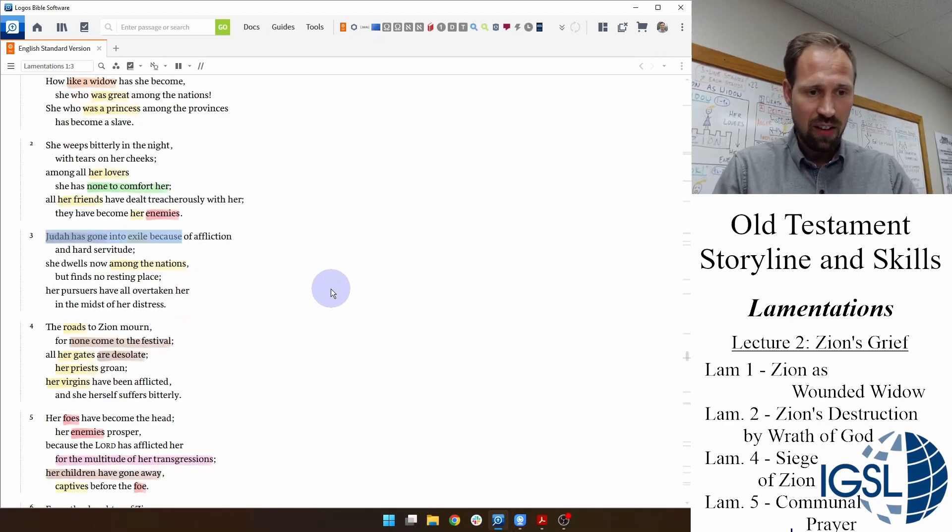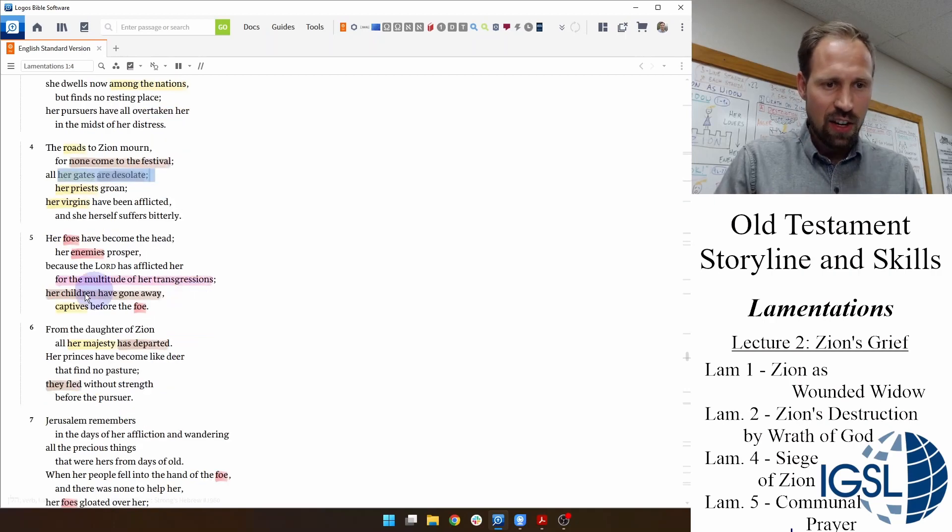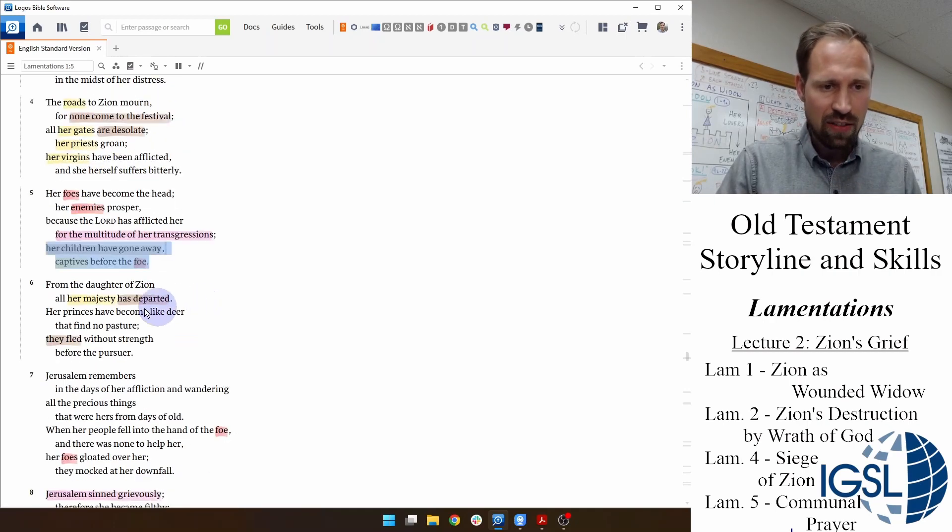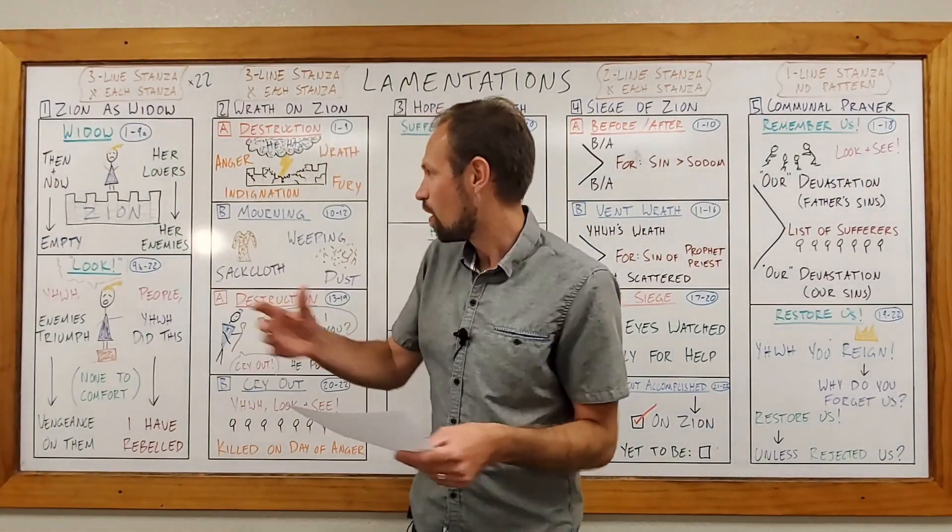And now she's all alone. Look, Judah is gone into exile. None come to the festival in Jerusalem. Her gates, which used to be full of people, are now desolate. Her children have gone away as captives. All of her majesty, that is her princes, they've departed. They fled before the pursuer. And this poor wounded widow, Zion, she's actually not innocent.